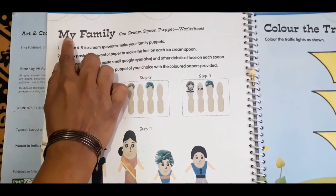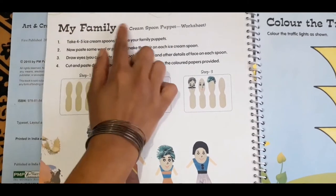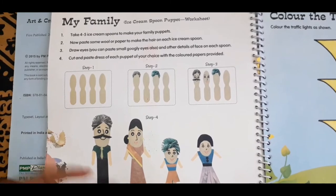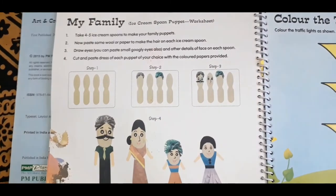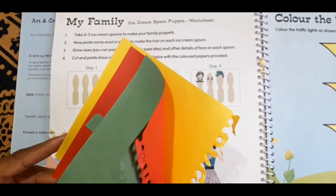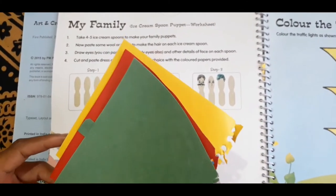Hello my dear children, today we are going to do my family ice cream spoon puppet. So you need to take four ice cream spoons and there is craft paper in your book - yellow, green, and red. If you have different craft paper you can use that.